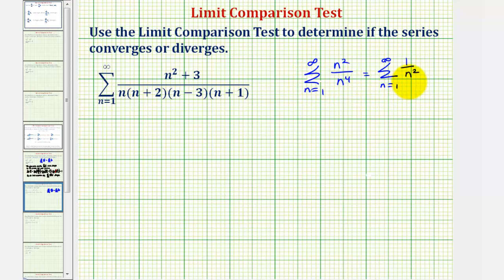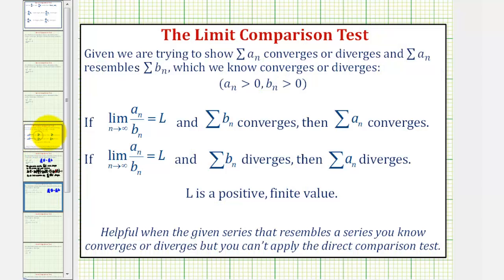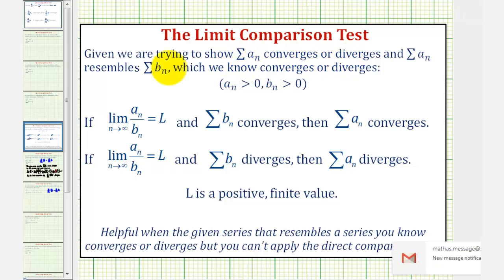We should recognize that this series will converge by the p-series test with p equals two. So because this series converges, we'll now apply the limit comparison test to hopefully show the given series also converges. Remember, when using the limit comparison test, we start with the given series a sub n, which we're trying to show converges or diverges, and the summation of a sub n resembles the summation of b sub n, which we know converges or diverges.